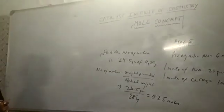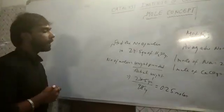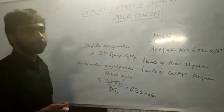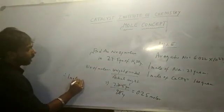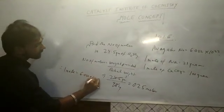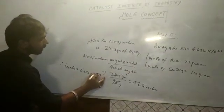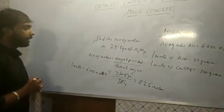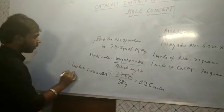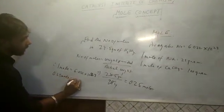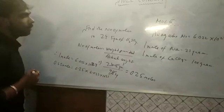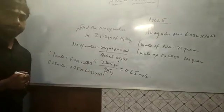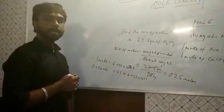Now, if asked how many molecules of H2SO4 are present in 24.5 grams of H2SO4: since 1 mole contains 6.022 × 10²³ particles, 0.25 moles will contain 0.25 × 6.022 × 10²³ molecules.